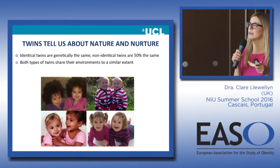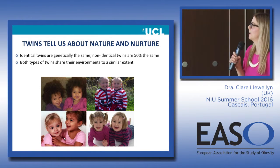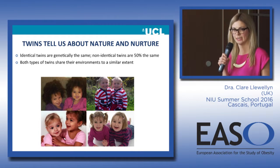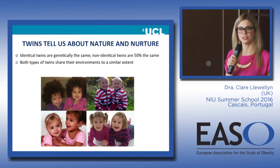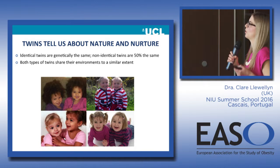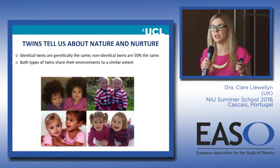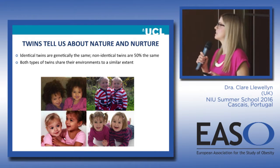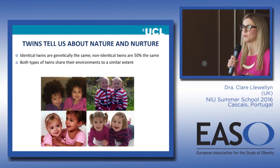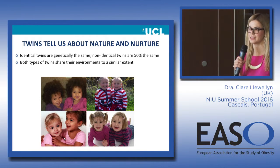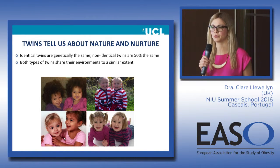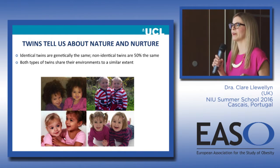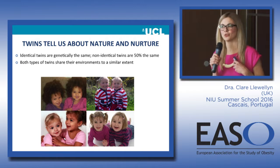The key difference is that like identical twins, non-identical twins share their environments to a very similar extent. As researchers we assume the only real difference between the two types of twins is that identical twins are twice as similar genetically. That means you can compare how similar identical twins are on any given trait such as BMI with how similar non-identical twins are. Any difference is assumed to result only from the identical twins being twice as similar genetically. The statistic derived is called heritability — an index of genetic effect size and the proportion of variation in a trait attributable to genetic variation.